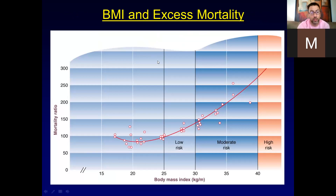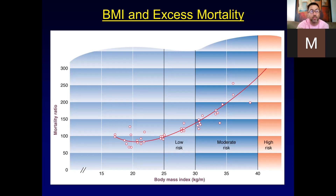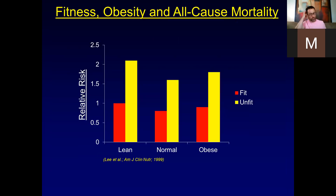A graph showing BMI and excess mortality plots excess mortality rates on the y-axis and body mass index on the x-axis. In the normal body composition range, risk is relatively low. As BMI moves into the overweight category, risk goes up a little. Up to about 35 is moderate risk, up to 40 is high risk, and as BMI increases beyond that there is a somewhat exponential increase in excess mortality. These data inform why we set the BMI cutoffs at 25 for overweight and 30 for obese.